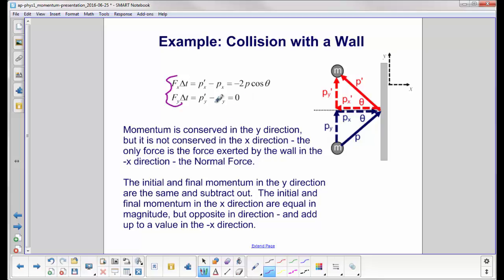These two equations tell us that the momentum is conserved in the y direction, but it is not conserved in the x direction. The only force we have here once the ball hits the wall is the normal force, which is perpendicular to the contact point here. So we have an external force in the x direction, so you would expect momentum not to be conserved, and it in fact is not. There is no external force in the y direction, so momentum is conserved. Mathematically again, the initial and final momentum in the y direction are the same and subtract out. That's right here. The initial and final momentum in the x direction are equal in magnitude, but opposite in direction. So they add up to a value in the negative x direction, and that tells you which direction the ball moves because of the wall. It's in the negative x direction.